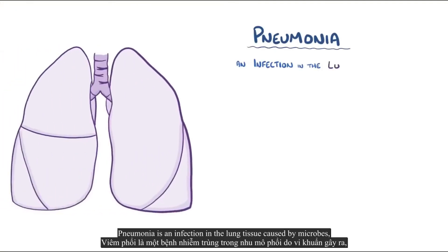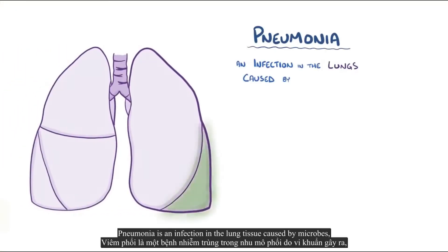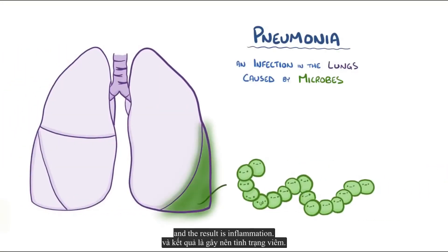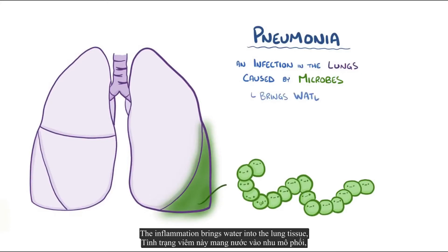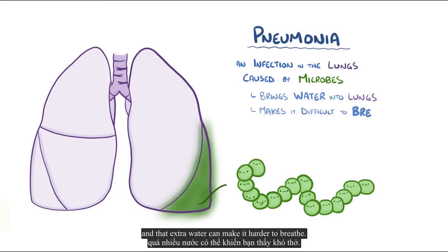Pneumonia is an infection in the lung tissue caused by microbes, and the result is inflammation. The inflammation brings water into the lung tissue, and that extra water can make it harder to breathe.